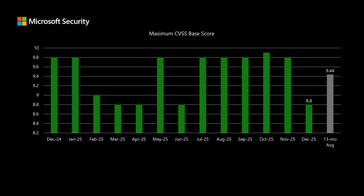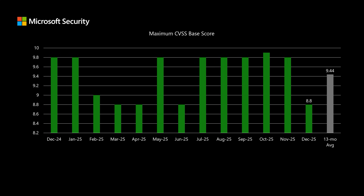Next, we'll move into scoring, where Microsoft uses the Common Vulnerability Scoring System, or CVSS. This is a scale between 0 and 10, where 10 represents the highest level of risk. This month, the highest scored CVE in the set comes in at 8.8, and we've been averaging right around 9.4 over the past 13 months.